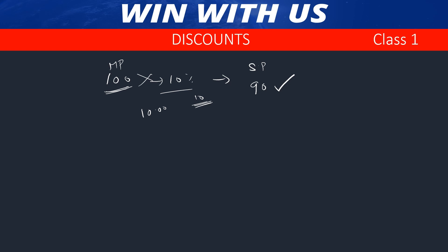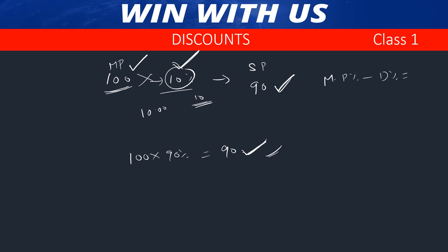If the market price is 100 and the discount is 10%, which means that you sell at 90 rupees. This is easy. Market price percentage minus discount percentage is equal to selling price percentage.